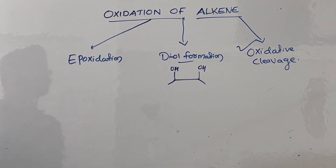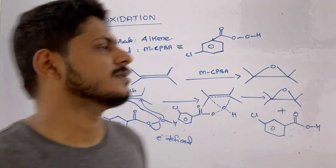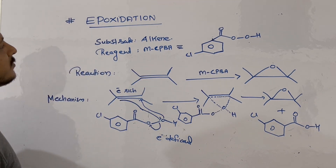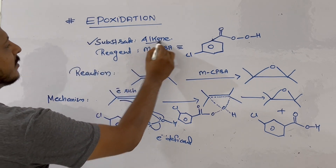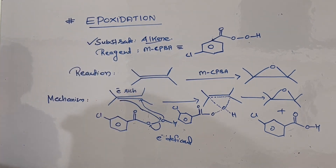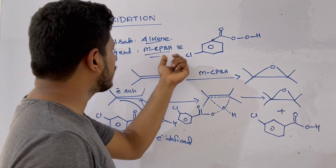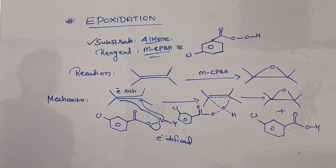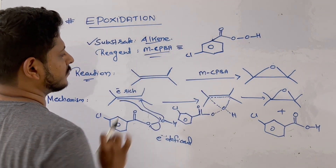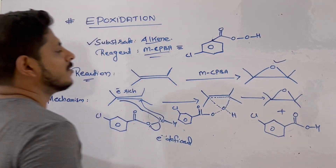These are the main three categories in which oxidation of alkene can be classified. Now let us discuss about epoxidation. For epoxidation, we have the substrate as our alkene, and the important reagent used is mCPBA, known as meta-chloroperoxybenzoic acid. If you react alkene with mCPBA, it will epoxidize into an epoxide.